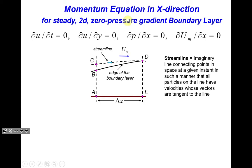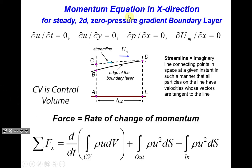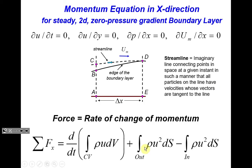The momentum equation in the streamwise direction is the most relevant for defining friction. The integral momentum equation is a form of Newton's second law: force acting on a body equals the rate of change of momentum. We equate all forces acting on the control volume to the change of momentum — the difference between momentum input and output. For the steady-state case, the time-derivative term disappears, simplifying the equation considerably.